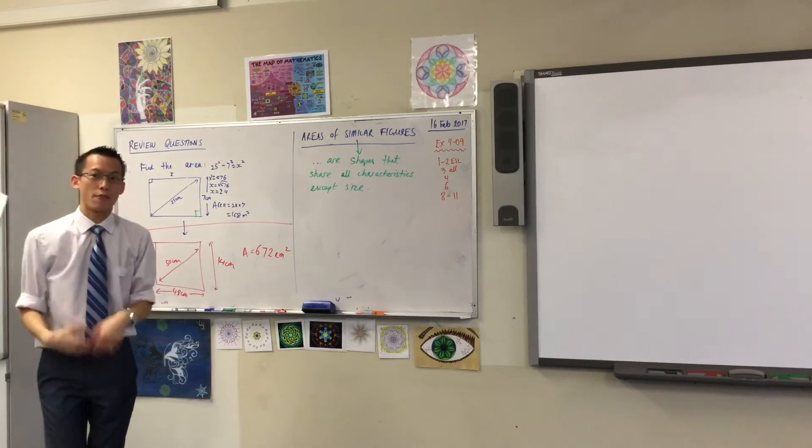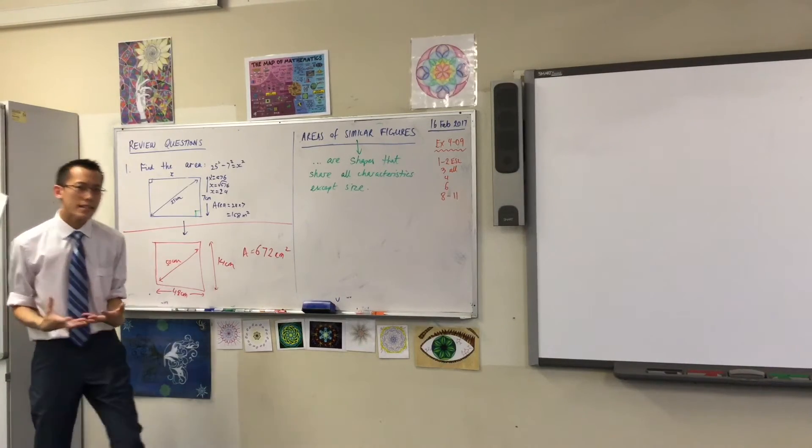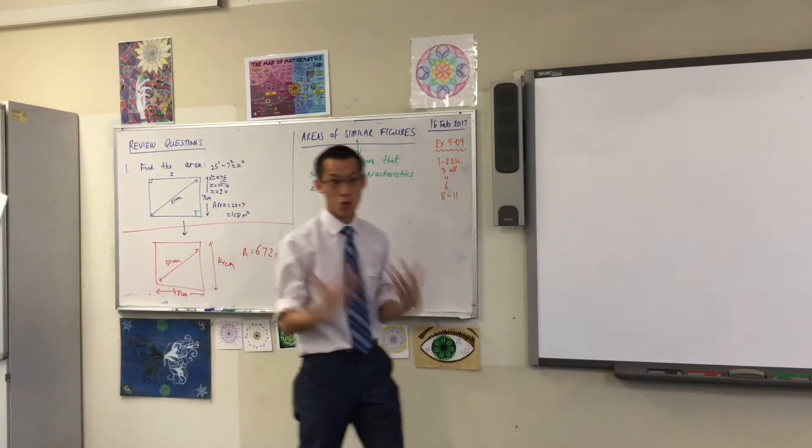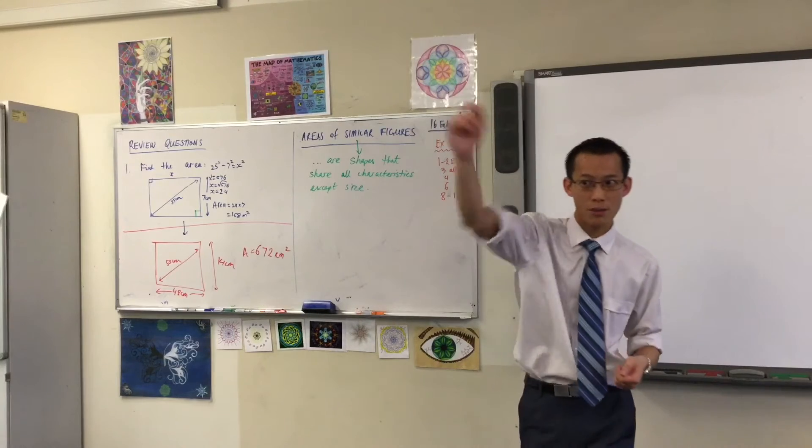Yeah, four times bigger, they have quadrupled. Now, this is a more important question. Why has the area quadrupled rather than doubled? If we doubled everything else, why didn't the area double as well? Sarah, what do you think?